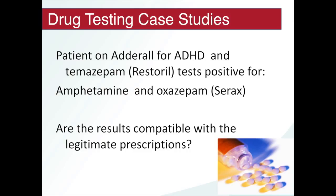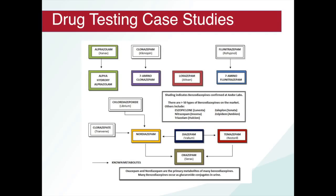A patient on Adderall for ADHD and Restoril tests positive for amphetamine and Serax (oxazepam). Are these results compatible with those prescriptions? We know that Adderall contains amphetamine sulfate, which explains the amphetamine. Looking at the metabolism of benzodiazepines, oxazepam is a metabolite of Restoril, as well as of Valium, Librium, and Tranxene. So in this case, the oxazepam is fully explained by the legitimate Restoril prescription.